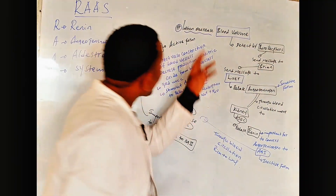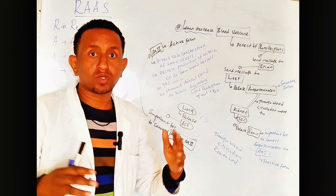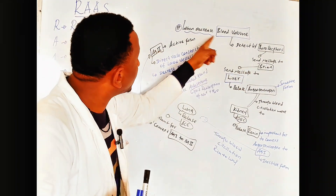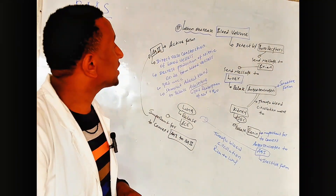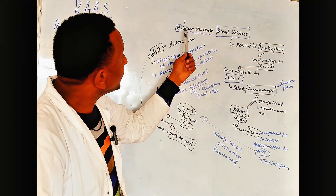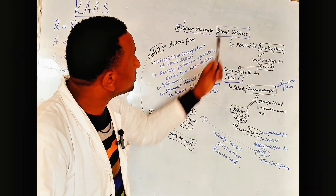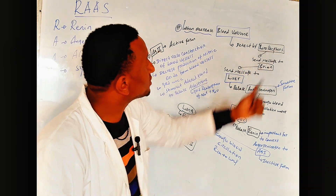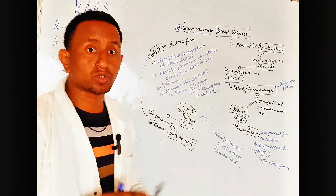When there is decreased blood volume, it is detected by baroreceptors. Decreased blood volume can occur due to vomiting, bleeding — internal as well as external — and fluid shift, causing hypovolemia.